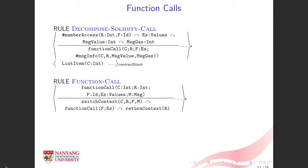The semantics of function calls is designed from a general point of view. Each external function call is regarded as an extension of an internal function call. Whenever there is an external function call, we first switch to the recipient instance and then call the function in that instance as an internal call. Finally, we switch back to the caller instance. In this way, external function calls can be achieved through internal function calls and switches of contract instances. There are three sub-steps in function call: switch context to the recipient instance, execute the internal function call, and return context to the caller instance.